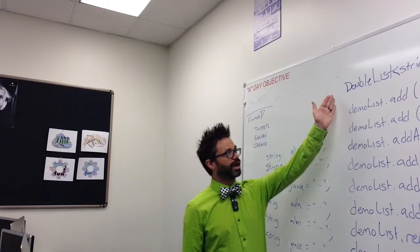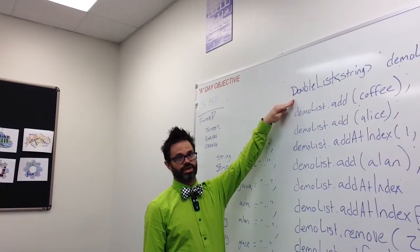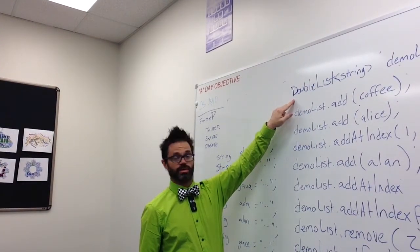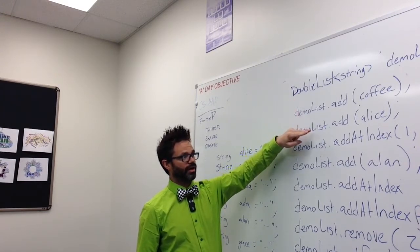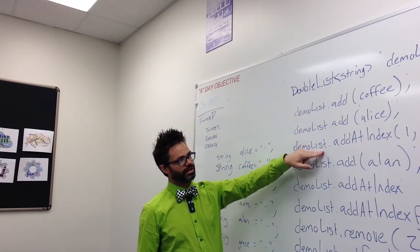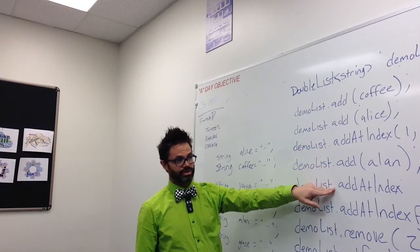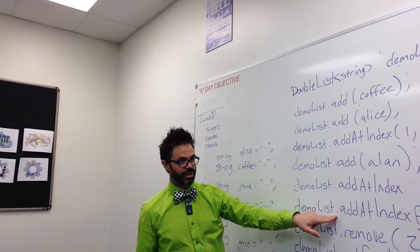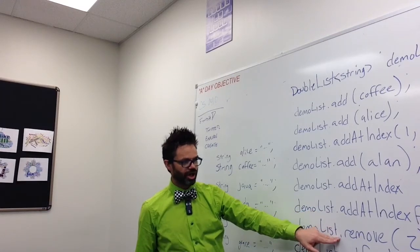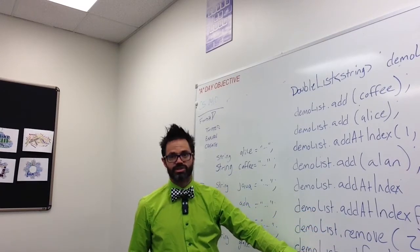We have up here a series of statements that belong to our double list. We create and initialize, in C++, a double list of type string called demo list. We dot add Coffee, Alice, add at index one Ada, add Alan, add at index two Java. Then we're going to use our add index fast method, passing three and Grace, dot remove passing the index of two, and get from index two.